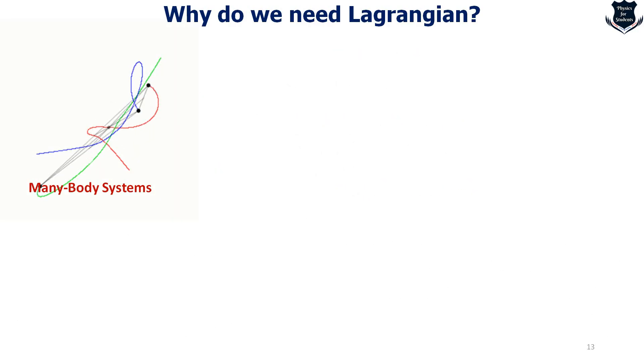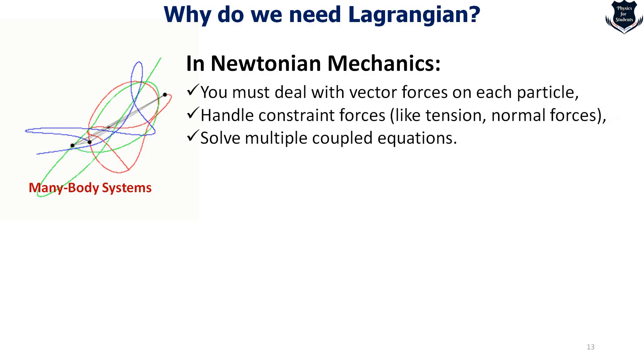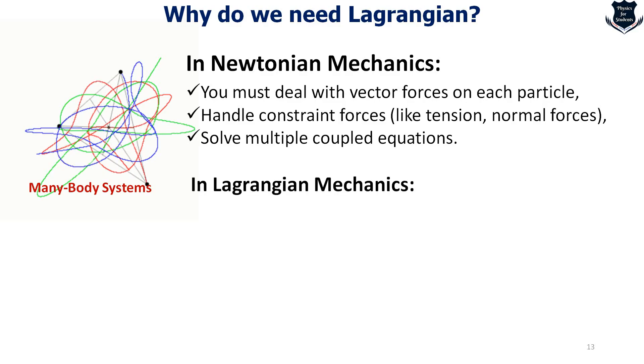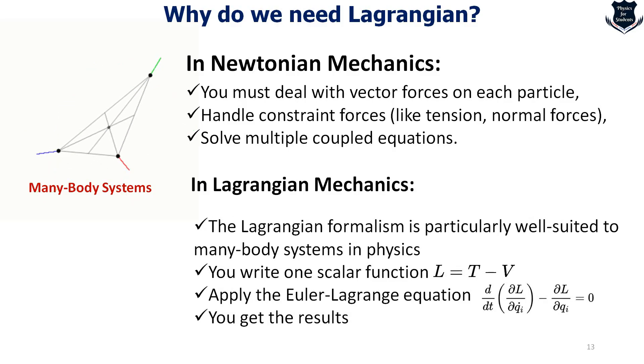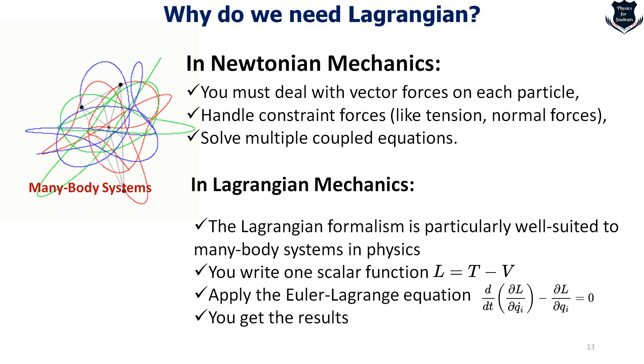You might have heard about something which is called a many-body system. You have got many particles which are oscillating around, they are creating complicated curves. In this kind of scenario, Newtonian mechanics is difficult. As I told you, it has to handle multiple constraints, forces, tensions, gravity etc. Lagrangian mechanics makes it simple. You can see here that we take the Lagrangian formalism, we just take one scalar equation, apply the Euler-Lagrange equation and you get the results. The many-body system which is dealing with so much complications is just solved elegantly using Lagrangian mechanics.